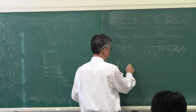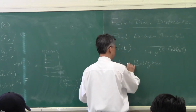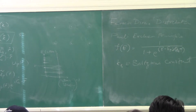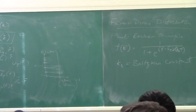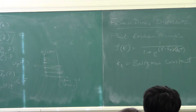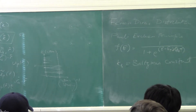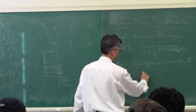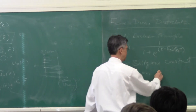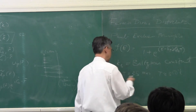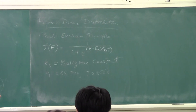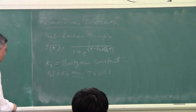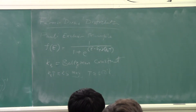The Fermi-Dirac distribution involves kB, the Boltzmann constant. K_B·T at room temperature (300 K) is about 25–26 milli-electron-volts. This is energy. So the system follows this Fermi-Dirac distribution law.